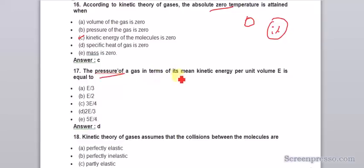The pressure of a gas in terms of its mean kinetic energy per unit volume E is equal to 2E by 3.